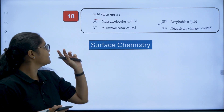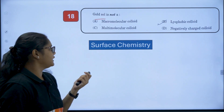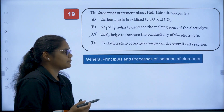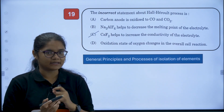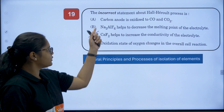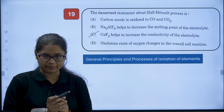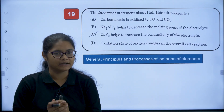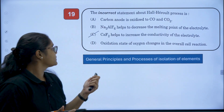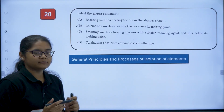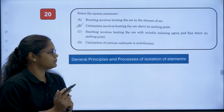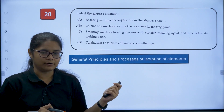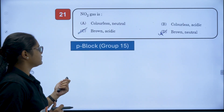So questions 4, 5, 6, 16, 17, and 18 are deleted. Question number 19 is from General Principles and Processes of Isolation of Elements — the Metallurgy chapter — and will not be evaluated since it came from the deleted portion. Question number 20 is also from the same chapter, General Principles and Processes of Isolation of Elements, and will also not be evaluated.